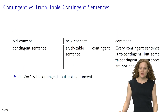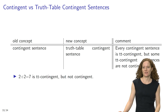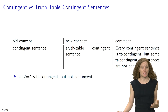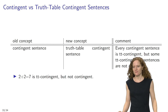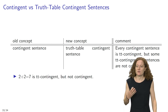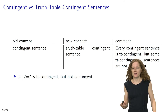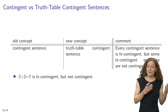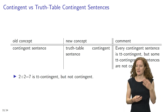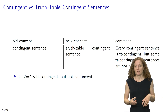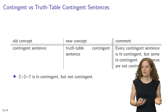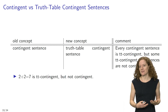Finally, let's compare contingent sentences with truth table contingent sentences. A sentence is contingent just in case it is true in some, but not in all hypothetical scenarios. In contrast, a sentence is truth table contingent just in case it is true in some, but not in all possible valuations. For example, the sentence '2 plus 3 equals 7' is truth table contingent, but it is not contingent, given that it is a necessary falsehood.